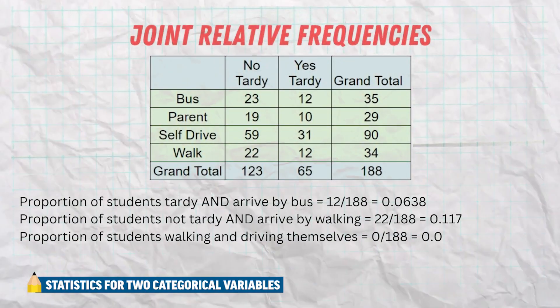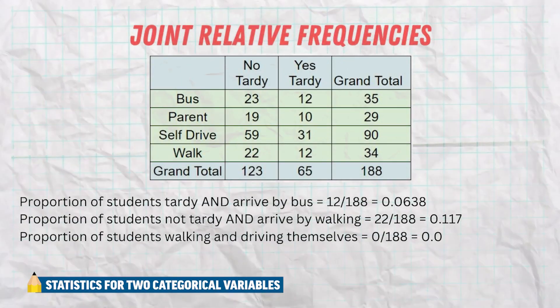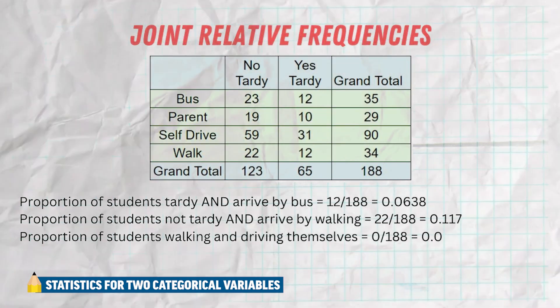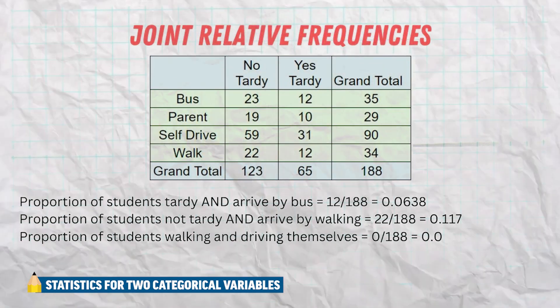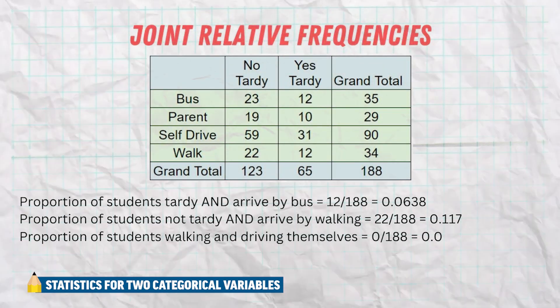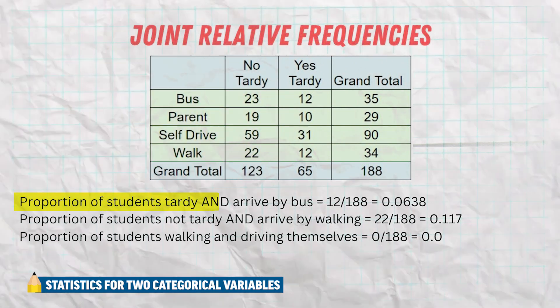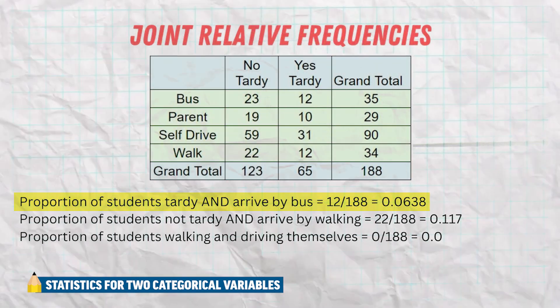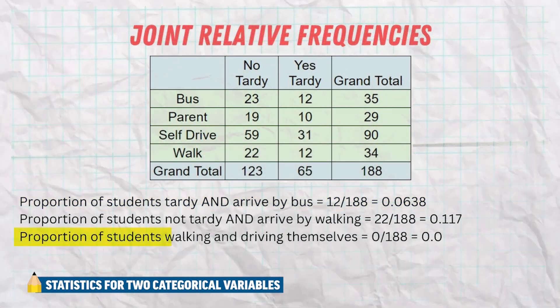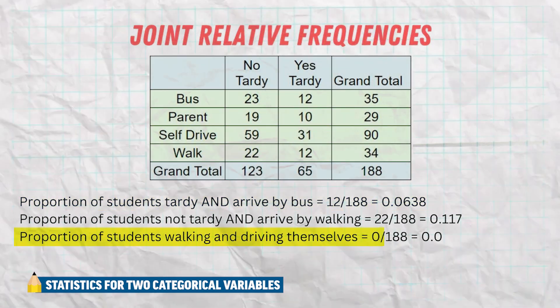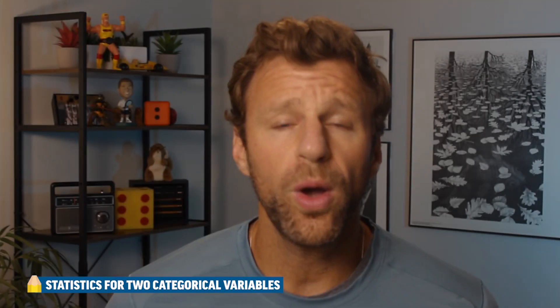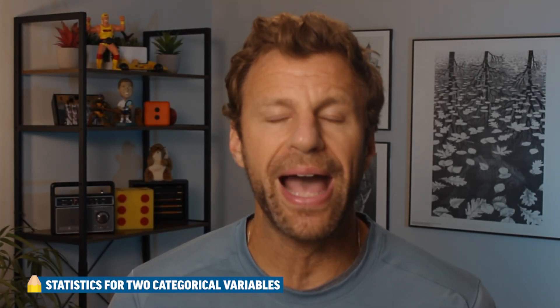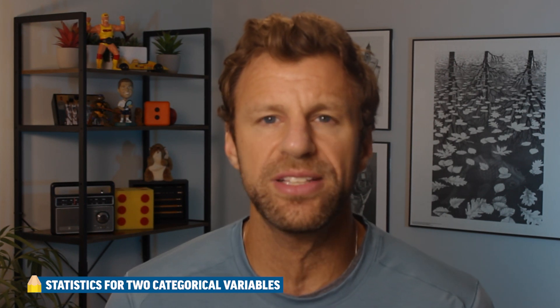Next up we have joint relative frequencies. When we say the word joint, we basically mean the word 'and' — we're combining any two categories together. For example, we could look at the proportion of kids that were tardy and rode the bus, or the proportion of kids that walk to school and drive themselves to school. For a joint relative frequency, we look at the specific value matching those two variables in the table and divide by the grand total.